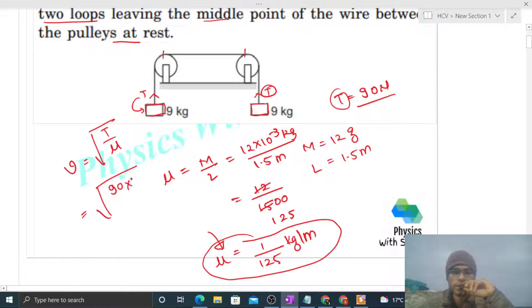When we divide by μ, this 125 will multiply. So this is the speed of the transverse wave. Right?